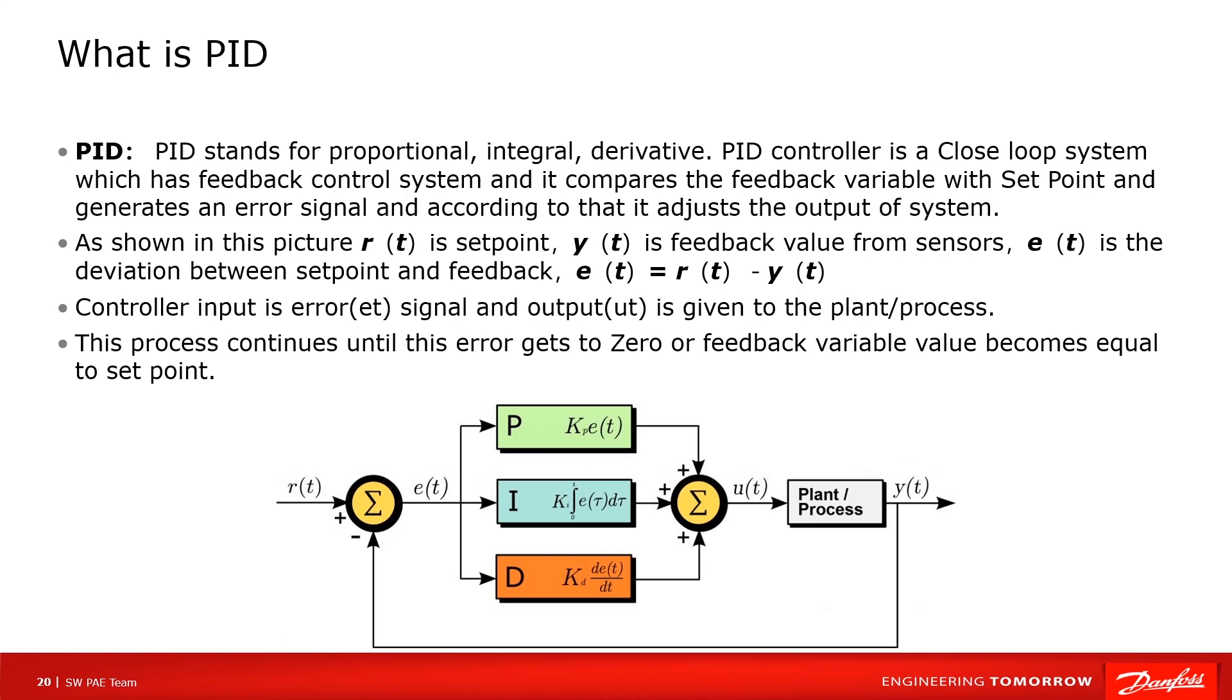PID controller is a closed-loop system with feedback. It compares feedback value with setpoint and generates an error signal. And according to the error signal, it adjusts the output of system. This process continues until this error gets to zero, or feedback value becomes equal to setpoint.